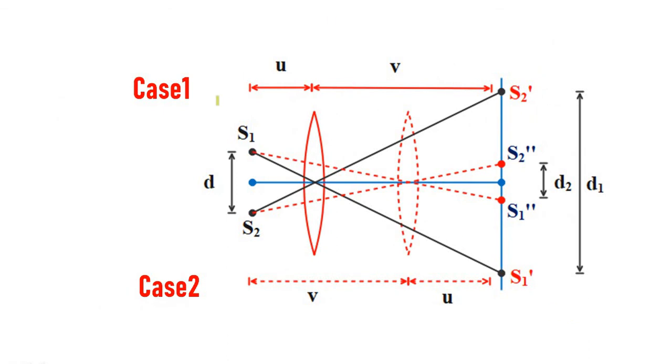This is the case of case 1 and case 2. This is the entire diagram. When case 1, this is the position of the lens. When case 2, this is the position of lens.